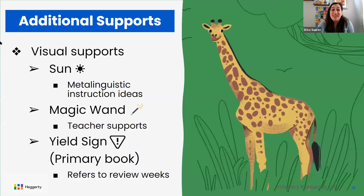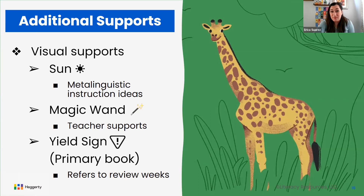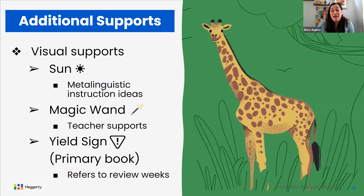I would like to talk to you about some additional visual supports we've implemented within the curriculum. You will see various symbols used as you start to implement this curriculum. The sun is a representation of metalinguistic instruction ideas — we have chosen to include this to help bridge the connection between both the English and Spanish language. You will also see a magic wand symbol, which shows teachers some additional ideas for support within the lessons. In addition to our hand motions, represented with a hand symbol, the magic wand provides the teacher with additional ways to support students in their learning. Within the primary curriculum, you will see the yield sign, which will appear in the overview pages as well as within the weeks of instruction anytime we recommend further review for your students.